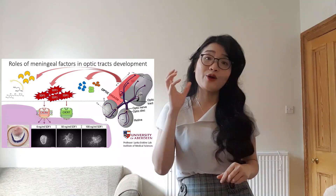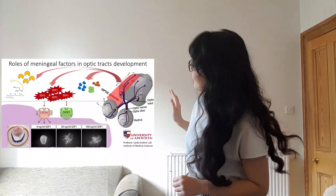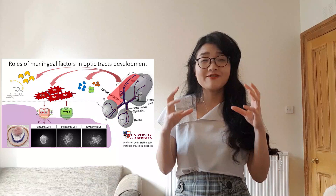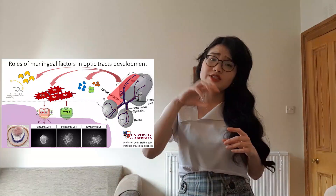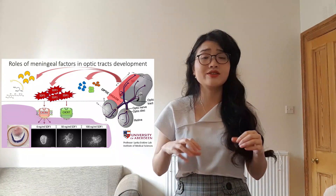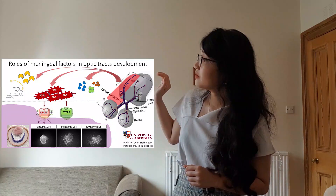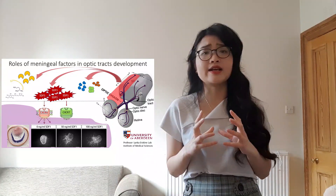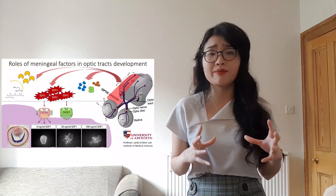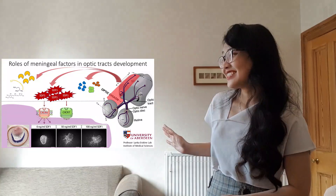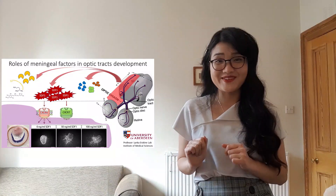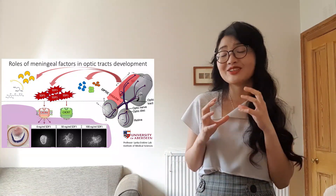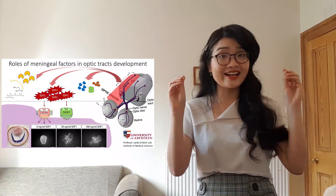These are proteins released from the meninges, shown in different colors here. The one in yellow is an enzyme that converts a chemical into its active form to act on the optic tract. The cluster in blue, green, and brown are proteins known to be involved in the structural development of the brain. My first candidate, SEL1, marked in red in the middle, is a chemokine known to attract different groups of neuronal cells to the correct location in the brain.